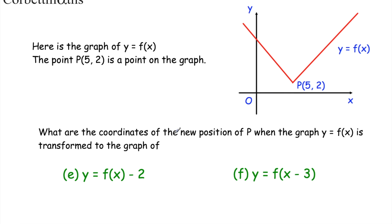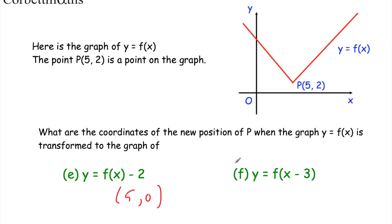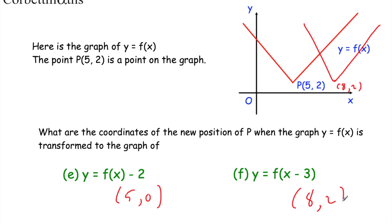For parts e and f, still with point P at 5, 2. Part e: y equals f of x minus 2 translates the graph two squares down. P moves from 5, 2 to 5, 0. Part f: y equals f of x minus 3, with the minus 3 inside the brackets — counterintuitively, rather than moving left it moves right. So all points translate three squares to the right, and P moves from 5, 2 to 8, 2.